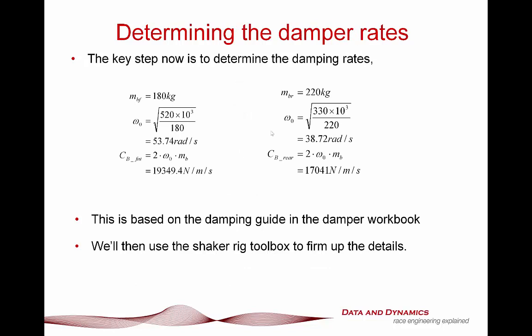Given all that, we can now go through and work out our base damping rates. The specifics on how you calculate that I've covered in depth in the ChassisSim Damper Workbook and the Damper Workbook Live tutorial. Based on the quarter car model approximation, you're looking at about 19,349 newtons per metres per second at the front and about 17,000 newtons per metres per second at the rear. We're then going to use the Shaker Rig Toolbox to firm up these details.